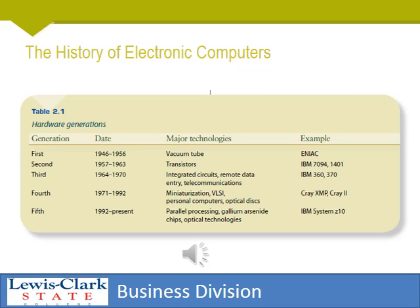When most of us think computer, we think electric. The first electronic computer was created in 1945 — it was the ENIAC. It was created for the Department of Defense and used to do defense calculations. From the ENIAC sprang a company called UNIVAC, which some of you may have heard of.